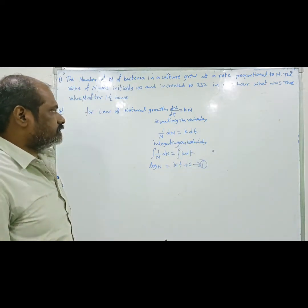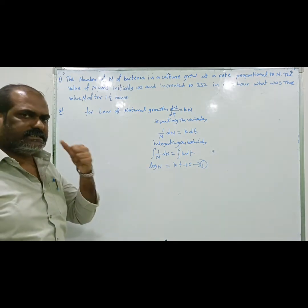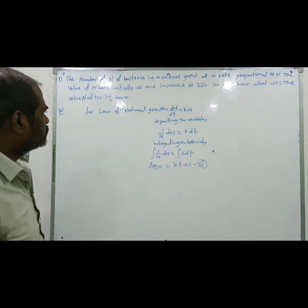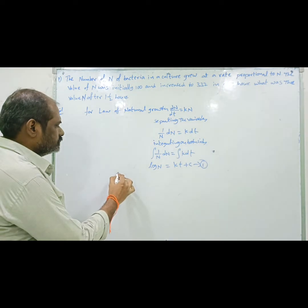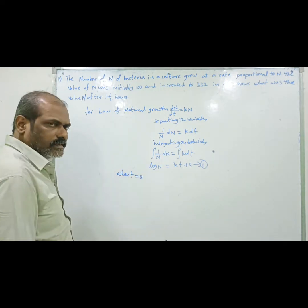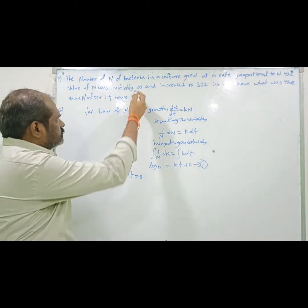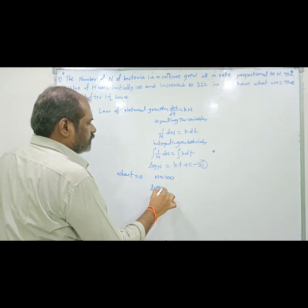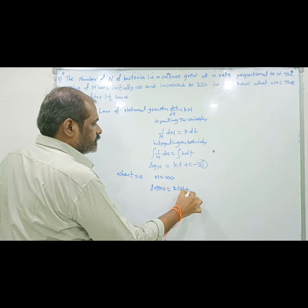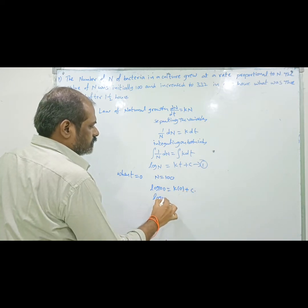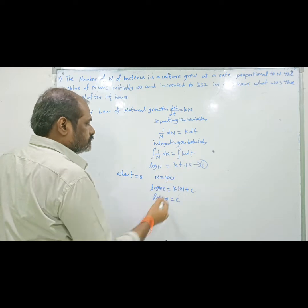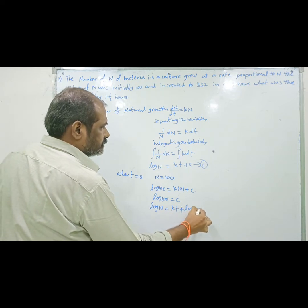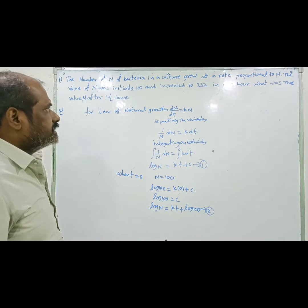The equation of the law of natural growth is log n = kt + c, where n is the amount of substance, t is time, and k and c are constants. Applying the initial condition: when t = 0, n = 100. Substituting gives log 100 = c. So equation 2 becomes: log n = kt + log 100, substituting c = log 100.